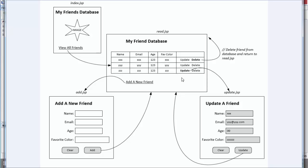In all of those cases we'll see the updated table. If it's deleted, the row will be gone. If it's updated, we'll see the change in the row. If it's added, there will be a new row. So this is what we're going to work on right now — getting this read to work correctly.